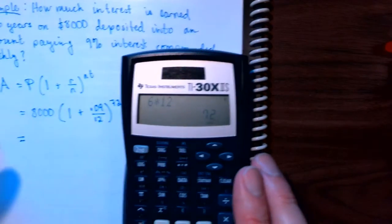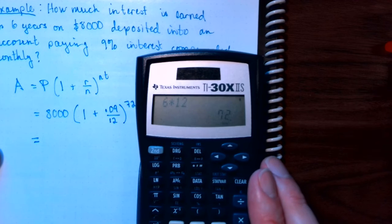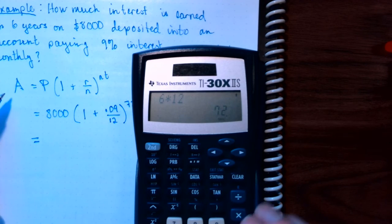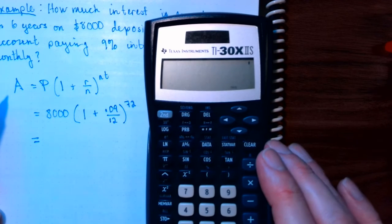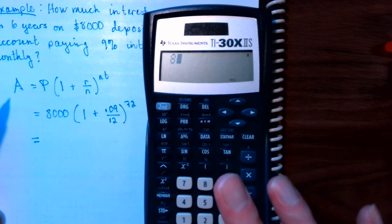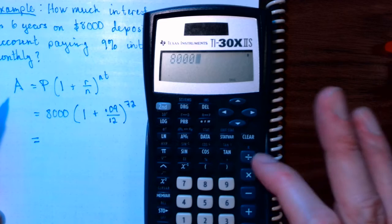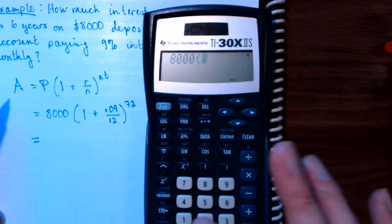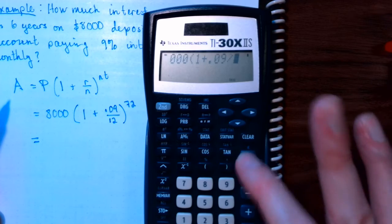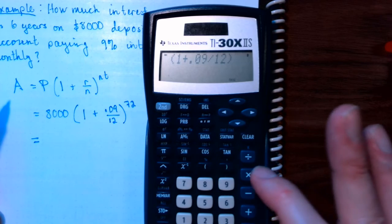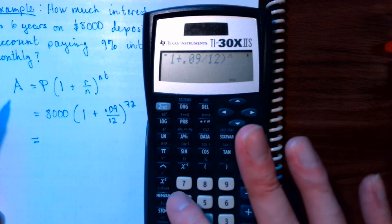So let's do this little computation here on our calculator. Make sure we get some good light on the calculator and the book there. So clear this out. So we have 8,000 and we can just enter this exactly as it looks. 1 plus .09 divided by 12 and then an exponent of 72.